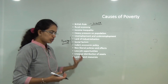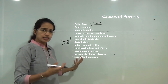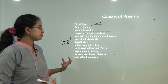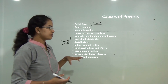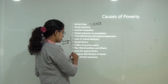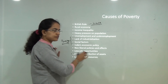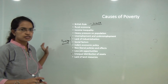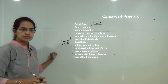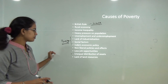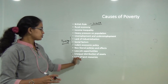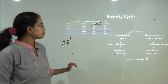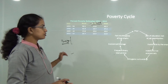With technological advancement there is less requirement for manpower. There has also been unequal distribution of assets — as mentioned, 60% of wealth is accumulated by only 1% of the top Indian population — resulting in lack of land resources. All these are the major causes of poverty.